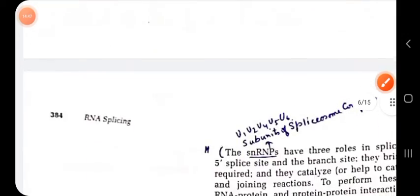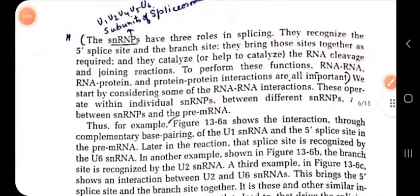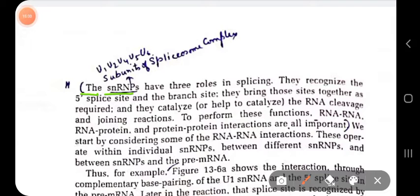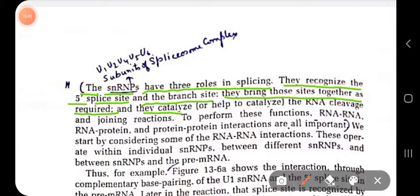The snRNPs have three roles in splicing. First, they recognize the five prime splice site and the branch site. Second, they bring those sites together as required. Third, they catalyze the RNA cleavage and joining reaction. These are the main important functions of the short nuclear ribonucleoproteins.